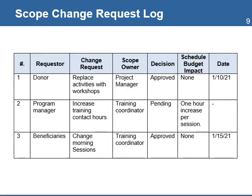An important component of the Scope Change Control Plan is the Scope Change Control Request Log. This is a simple table that helps monitor all requests for changes to the scope. The first column identifies the person who originated the request, the date of the request, the description of the change, the person responsible for managing the request, the decision on the request, the analysis of the impact of the change in the budget and schedule, and finally, the date when the request was approved. The dates can be used to monitor the time it took from the moment a request was proposed until it was approved or rejected.